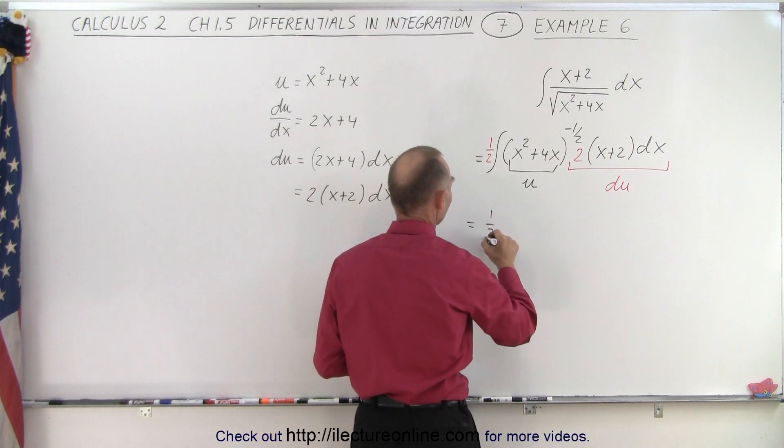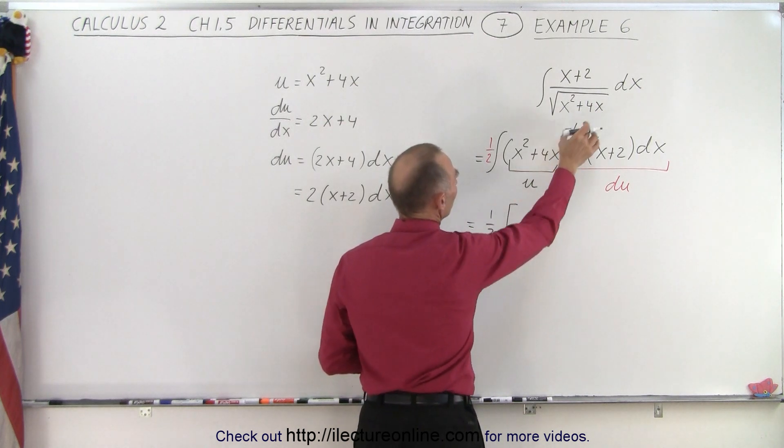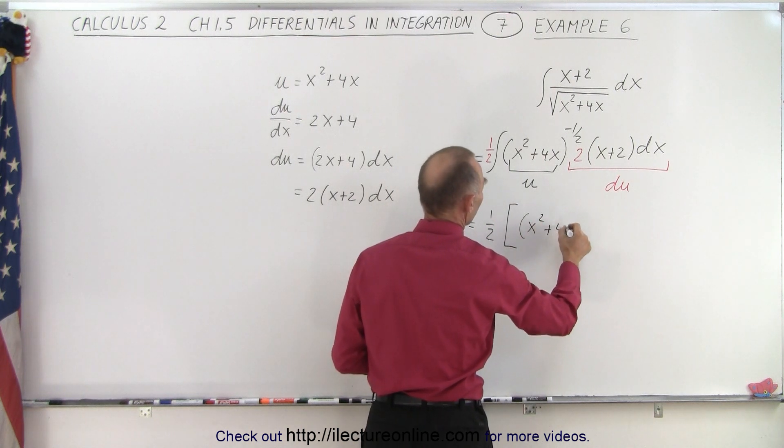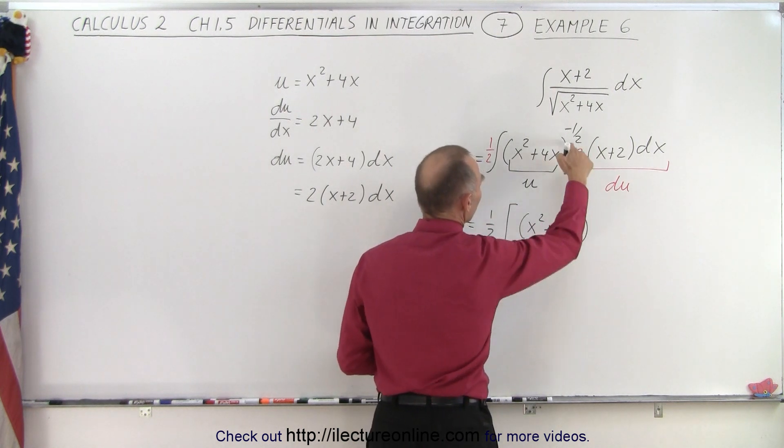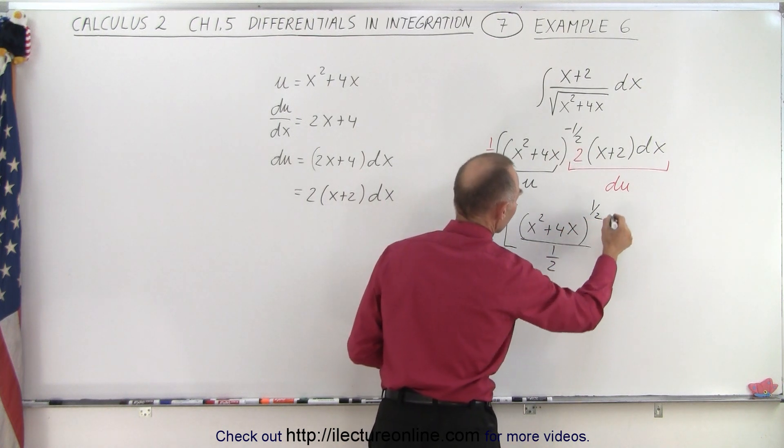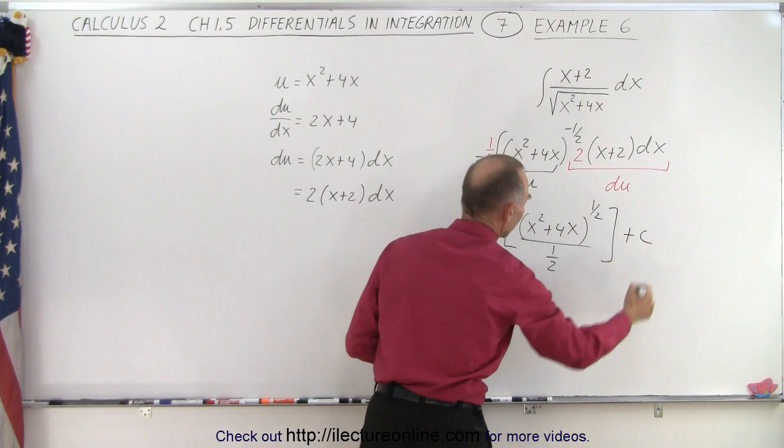This is equal to one half times this quantity. Raise exponent by 1, so we end up with x squared plus 4x, minus one half plus 1 is plus one half, divided by the new exponent one half, and plus a constant of integration.